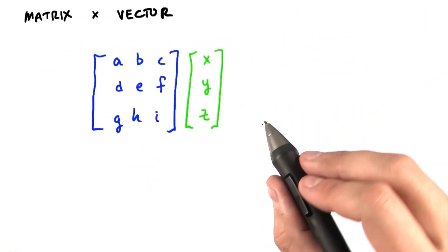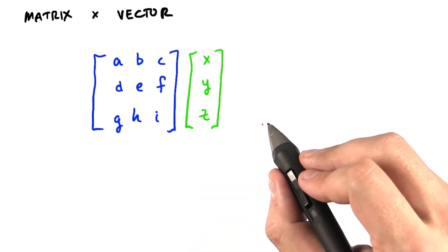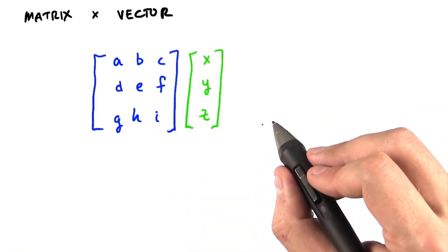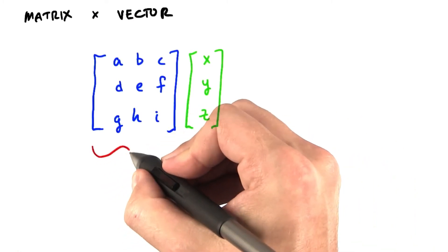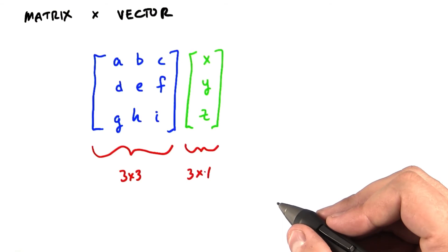Let's briefly refresh how we multiply a matrix by a vector. Students who already know this are welcome to skip to the next segment. So we're going to multiply this 3 by 3 matrix here by this 3 by 1 matrix here. So how do we do this?